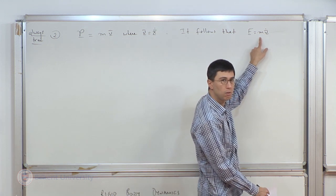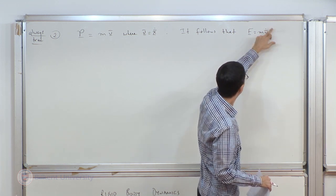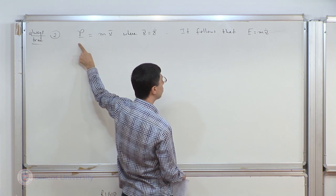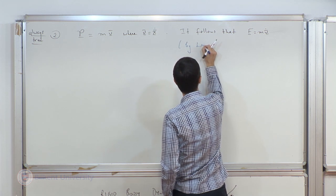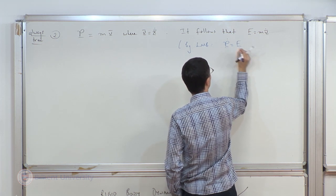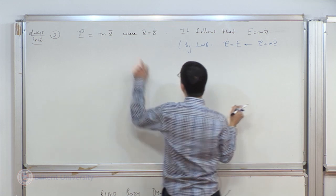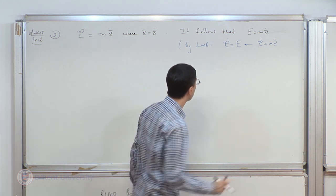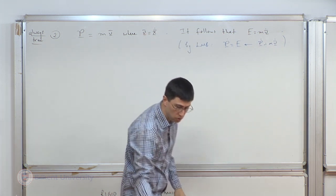Why does that work? It follows from Euler's laws of motion — whether the object is deformable or not, the rate of change of total linear momentum equals force. And P-dot equals M v-bar-dot because M is constant for a closed system. So the second part follows from linear momentum balance. All we have to show is the first part: P = M v-bar.